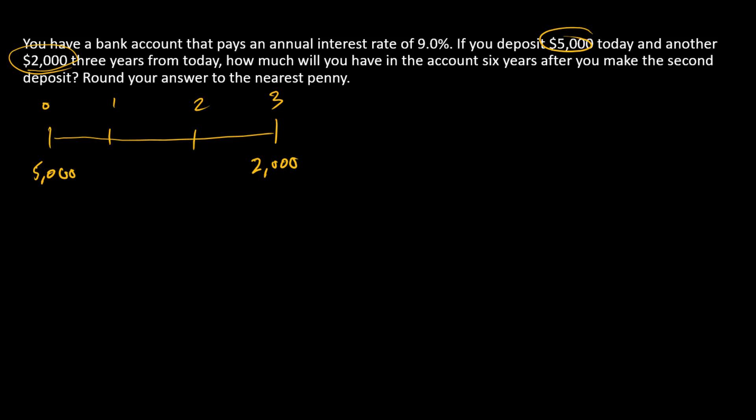The problem that we're working has the following context: we've got a bank account, we're gonna make these deposits. We're gonna drop the $5,000 and $2,000 into the account and then we're gonna leave them in the account and go down the road and see how much money we have.